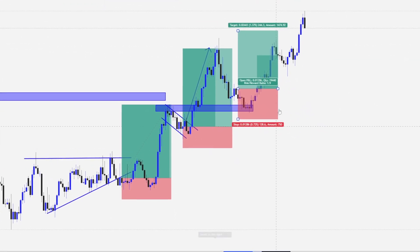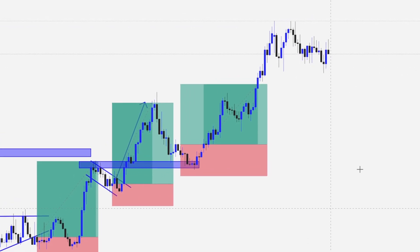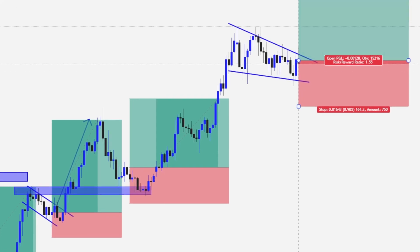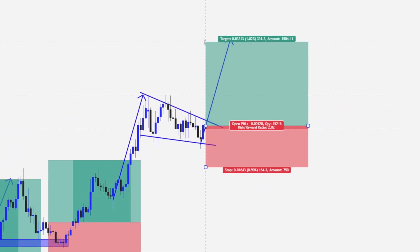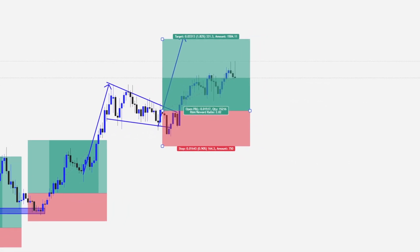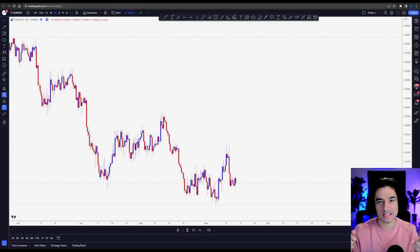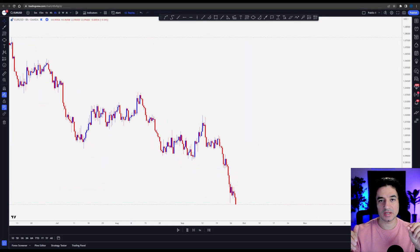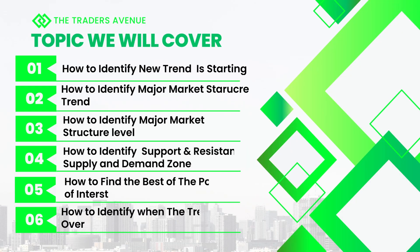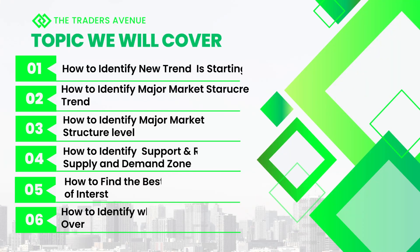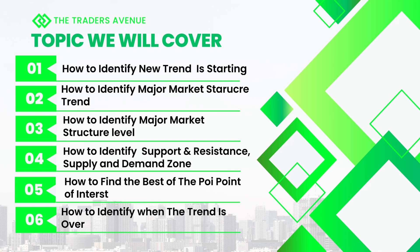Knowing when the market is about to call it quits is more crucial than identifying a new trend, because just because the trend is over doesn't automatically mean a new trend is starting. Having the skill to identify when the trend is over or when a new trend is starting is the foundation of every strategy. In today's video we will cover how to identify a new trend, major market swings, major and minor market structure, support and resistance, supply and demand zones, point of interest levels, and how to identify when the trend is over.